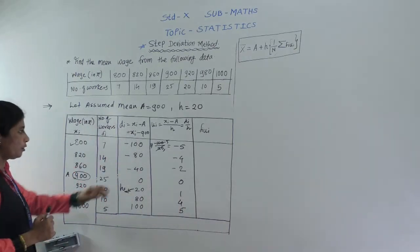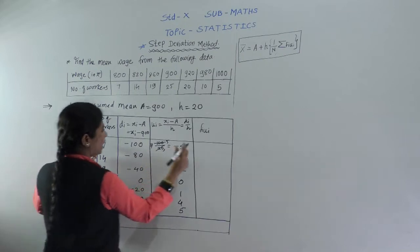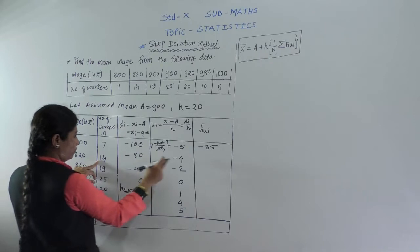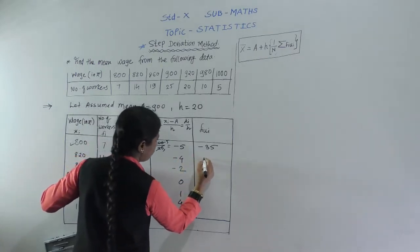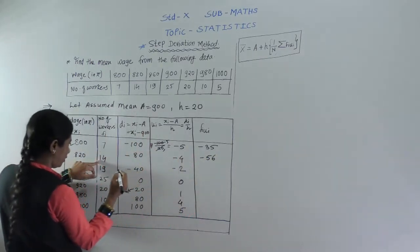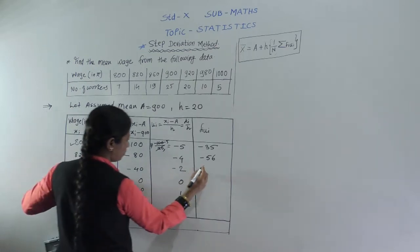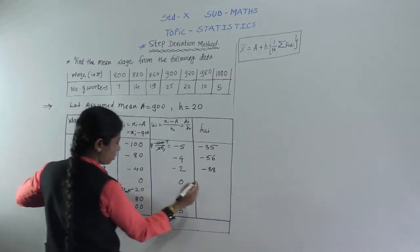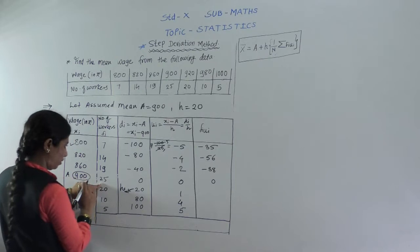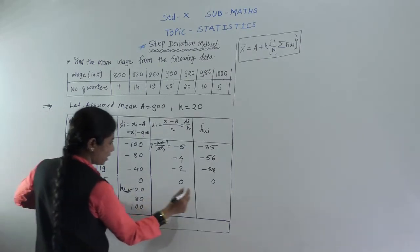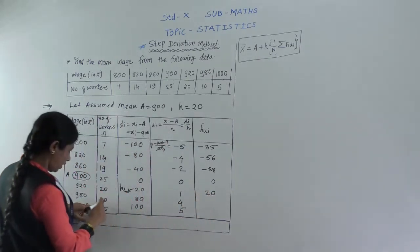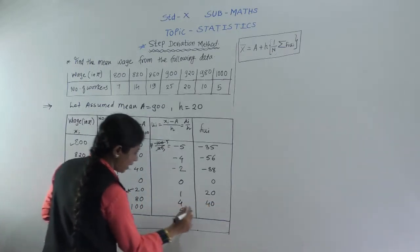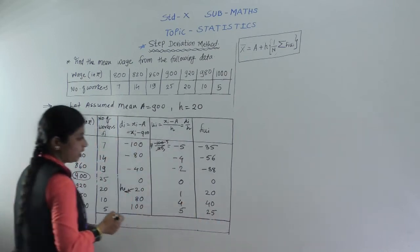Now we have to find fi·ui for each row. Multiplying each fi by its corresponding ui: 7×(−5) = −35, then 4×(−4) = −16, then 9×(−2) = −18. For A, 25×0 = 0. Then 20×1 = 20, 10×4 = 40, and 5×5 = 25.